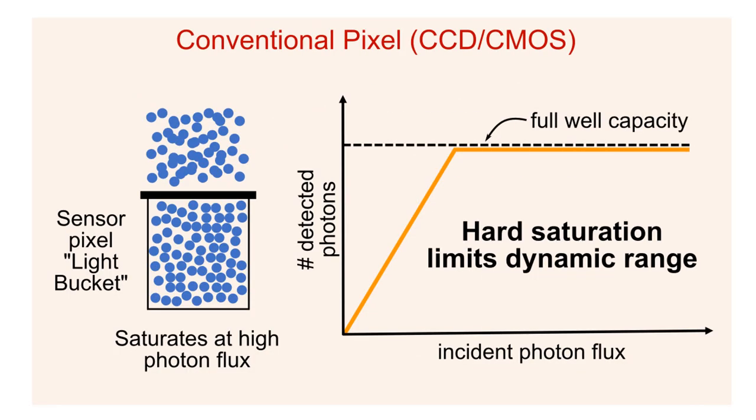First let's review how a regular camera works. Each pixel can be thought of as a light bucket that collects photons over a fixed exposure time. This bucket fills up with photons proportional to the scene brightness. However, this bucket has a limited capacity called the full well capacity,